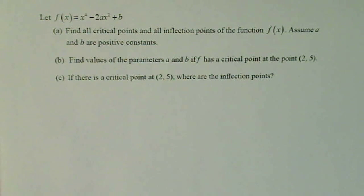Okay, this problem gives us f(x) which is x to the fourth minus 2ax squared plus b. We're supposed to find all the critical points and all the inflection points of f(x), assuming a and b are constants.